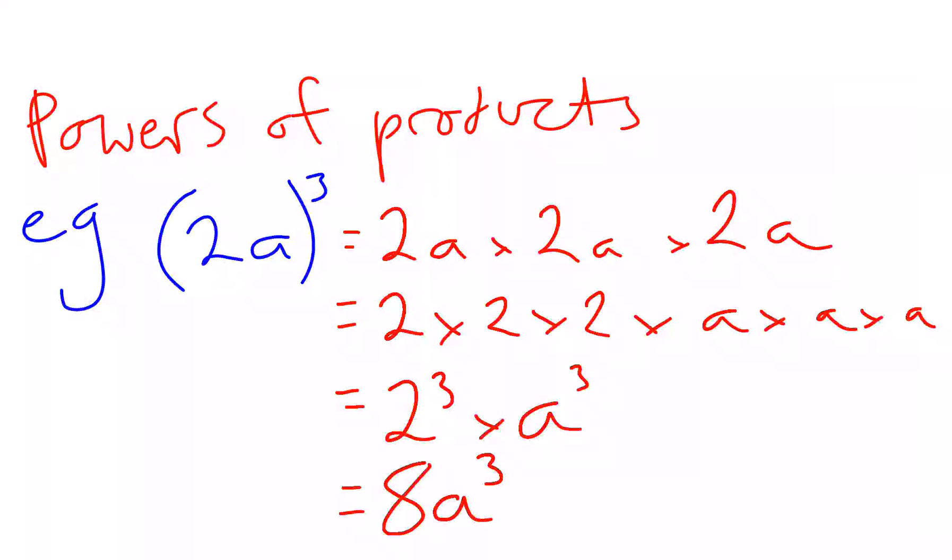Now in the Index Laws, we're always trying to look for a shortcut. So we look for the shortcut here, and this line here is our most useful one. You can see that everything in the bracket, the 2 and the a, has been raised to the power of 3. We don't need these two lines, we can skip straight to this line and our answer.